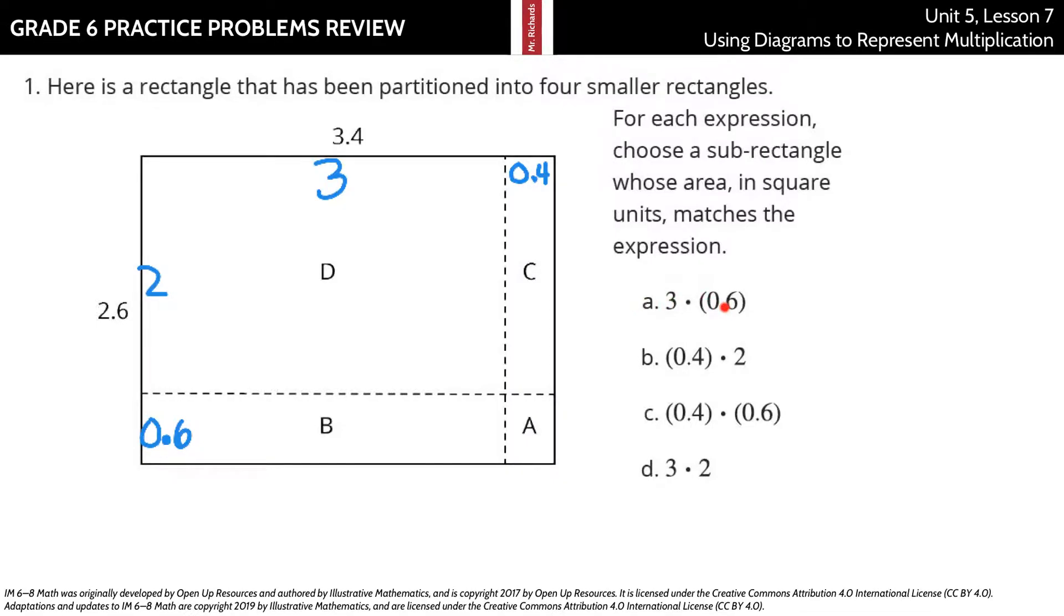3 times 0.6. Well, here's our 3 side, which also matches then this 3 side. And so 3 times 0.6 will get me the area of B.